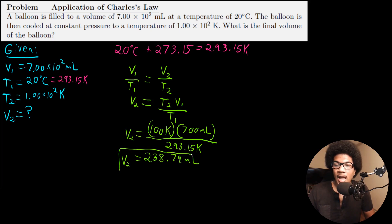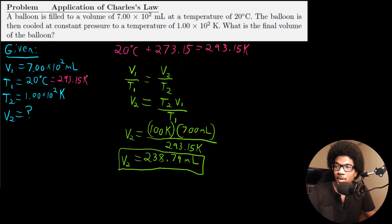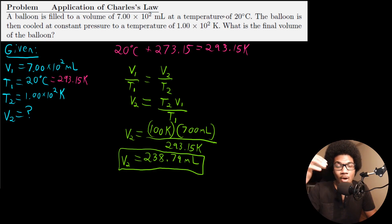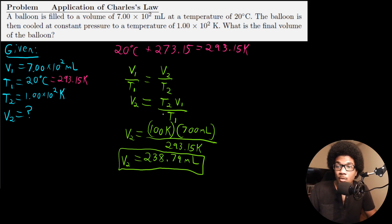That gives us our final volume. Doing a quick sanity check: we started at 700 milliliters and 20 degrees Celsius, and we're cooling this balloon, dropping the temperature. From Charles's Law, if we drop the temperature the volume should drop right along with it — and that's exactly what we see. We get a much smaller volume having cooled the balloon.